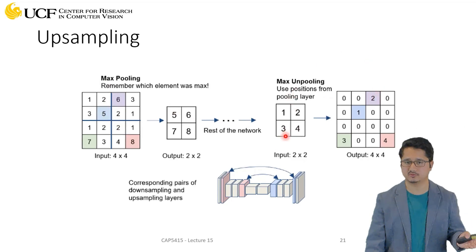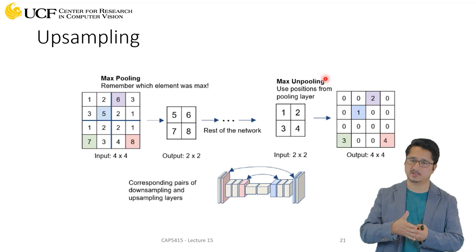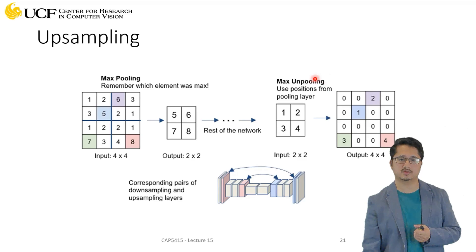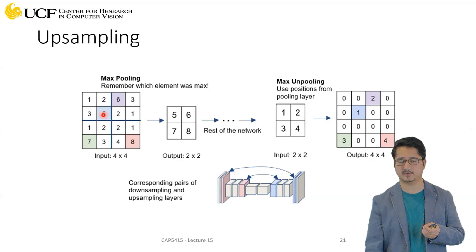So the idea here is, how can we utilize this information when we are performing upsampling? Because right now the previous approaches we saw, for example when you were just doing nearest neighbor, you were just repeating 1 into four different values because you don't know from where exactly this 1 came from. So what we can do is when we are doing max pooling in the encoder, we can try to remember which element was actually getting picked. For example, if 5 was picked, just store this value, the location of this number 5.